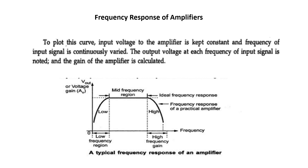At very low frequency, the coupling and bypass capacitors cannot be considered as short circuit because their reactance are too large to be neglected. At high frequencies, the reactance of transistor internal capacitances are very low so they cannot be treated as open circuit. In order to understand the effect of frequency on the amplifier, all the capacitor effects have to be considered.